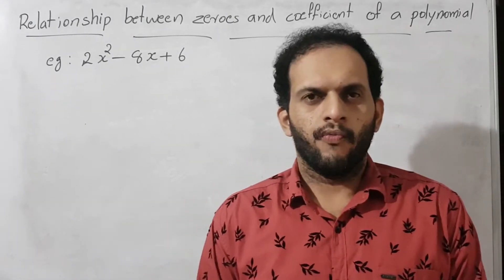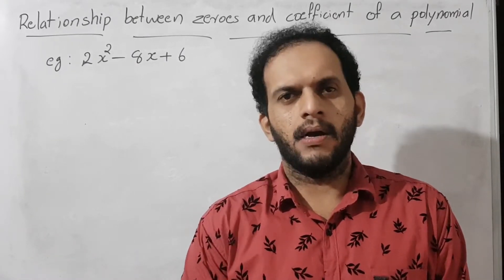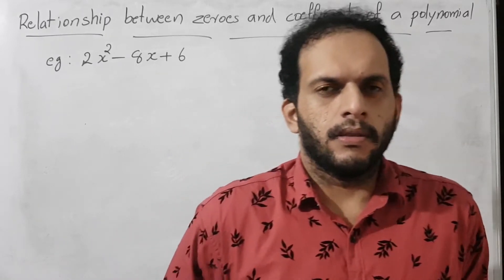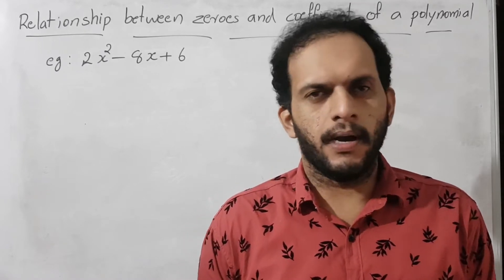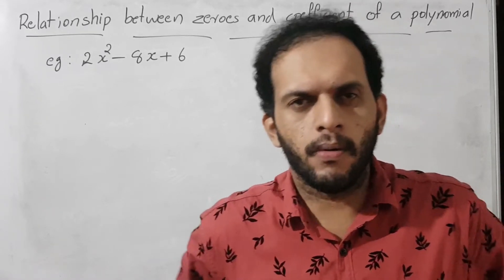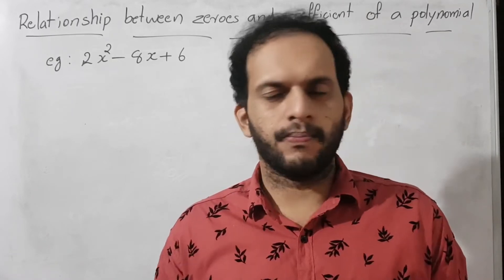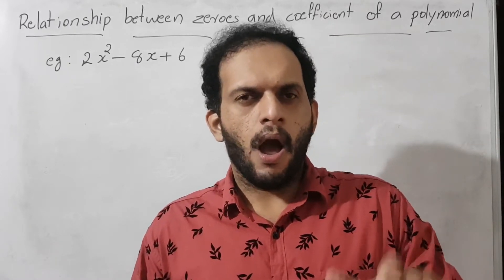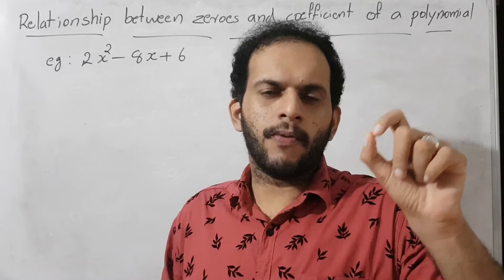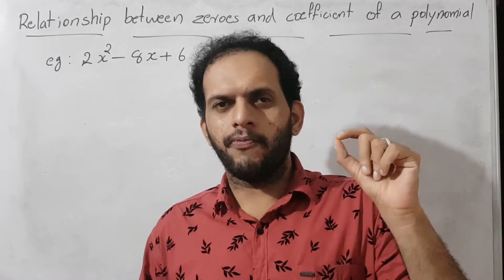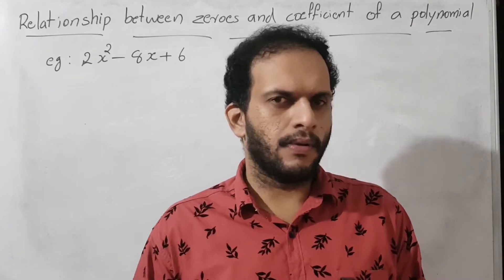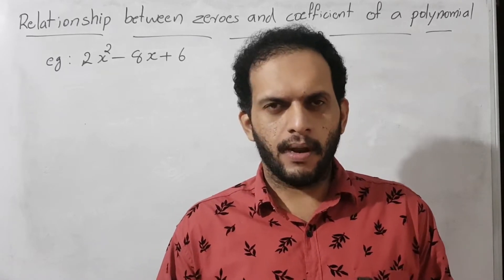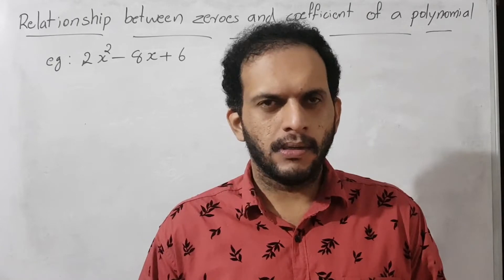In the last class, we learned the geometrical meaning of zeros of a polynomial, how to identify the number of zeros using graphical representation, and how to identify the zeros of a polynomial in a graph. The zeros are the x-coordinates of the points where the graph intersects the x-axis.